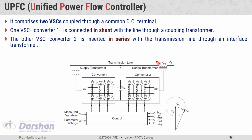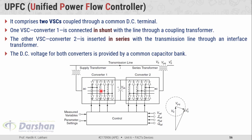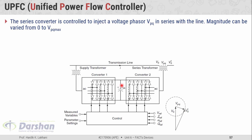You can say that the Unified Power Flow Controller is the combination of STATCOM and Static Synchronous Series Compensator — it is the combination of SSSC and STATCOM. DC voltage for both converters is provided by a common capacitor bank. The series converter is controlled to inject a voltage phasor VPQ in series with the line, and its magnitude can be varied from 0 to VPQ maximum. The injected voltage decides the exchange of real and reactive power between the compensator and the transmission line.